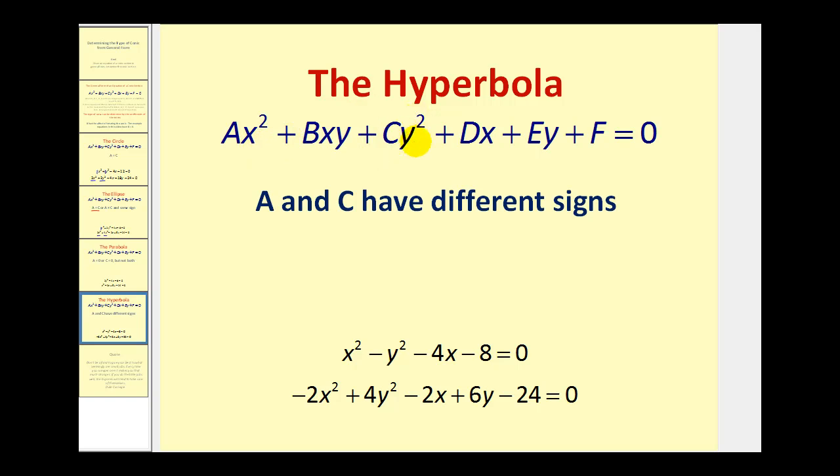In this first example we have A equals one and C equals negative one, therefore we have a hyperbola. In the second example we have A equals negative two and C equals positive four, which have different signs and therefore we have a hyperbola.